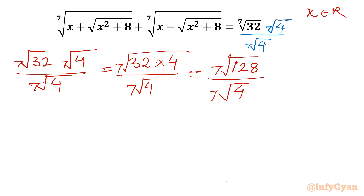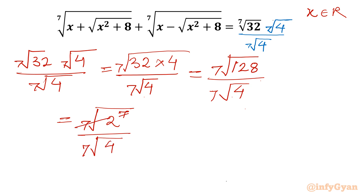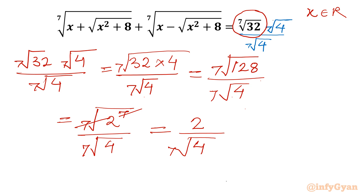Now 128 is 2 to the power 7. So I will write the 7th root of 2 to the power 7, divided by the 7th root of 4. The 7th root and power 7 cancel, leaving 2 in the numerator. So instead of writing the 7th root of 32, I will be writing 2 over the 7th root of 4.